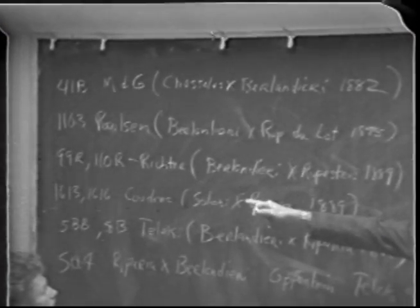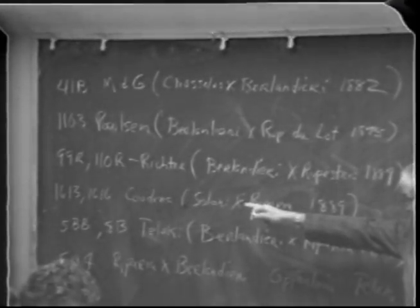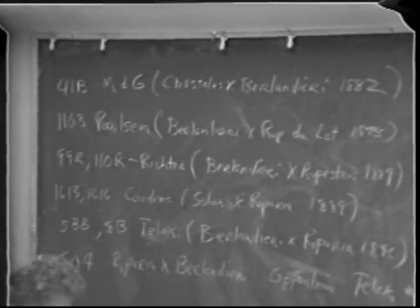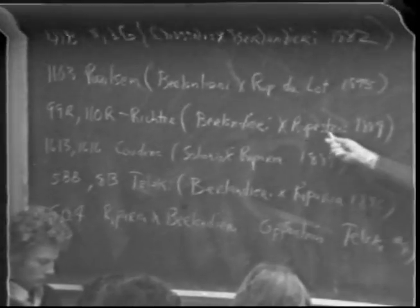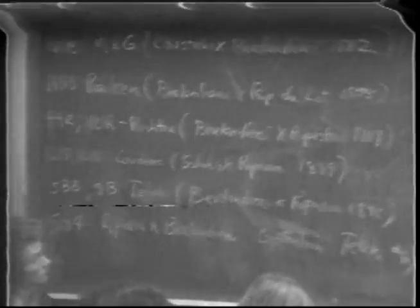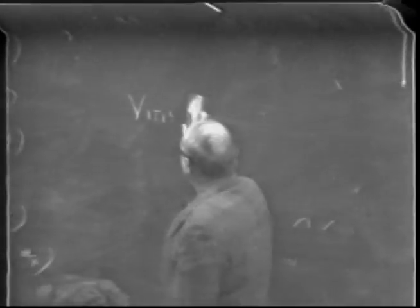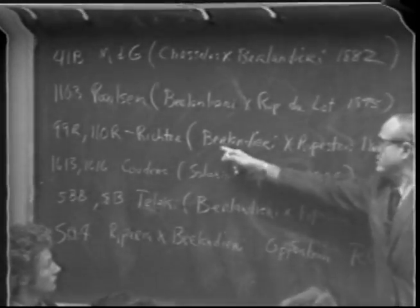Our well-known 1613, used down in the valley as our nematode-resistant rootstock, as well as 1616, was developed by Couderc. It's a Solonis x Riparia cross — not Rupestris. So we have three main species: Berlandieri, Rupestris, and Riparia. Technically these should all be written as Vitis with a lowercase species name, but when writing crosses we leave off the Vitis and just write the species to save writing.